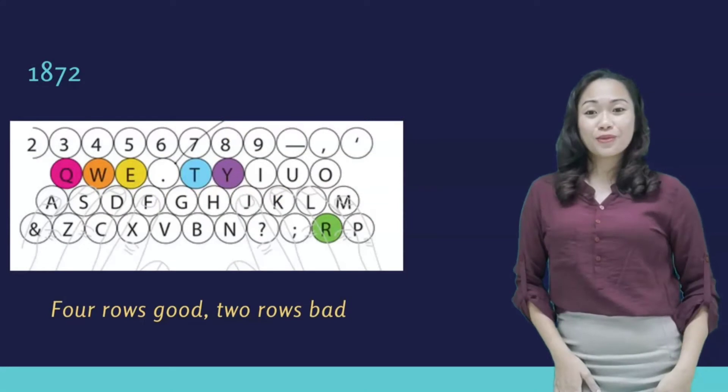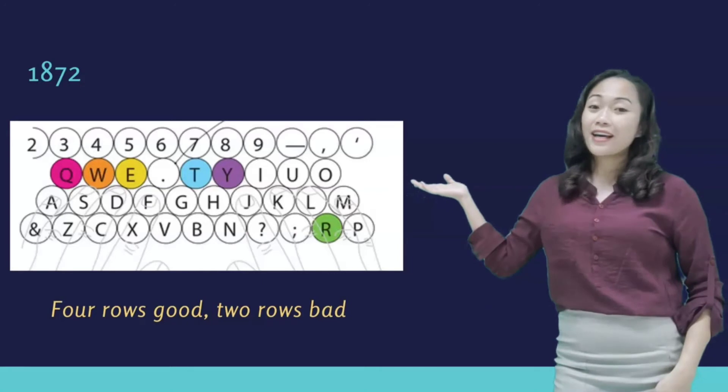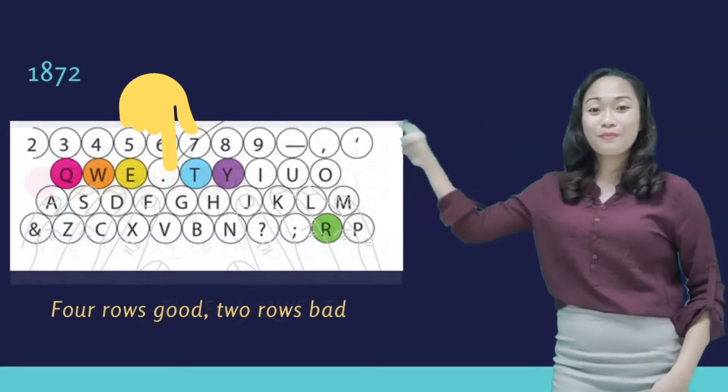In 1872, they had a new keyboard arrangement with a first hint of QWERTY. As you can see, the period or full stop would soon move to the bottom right.